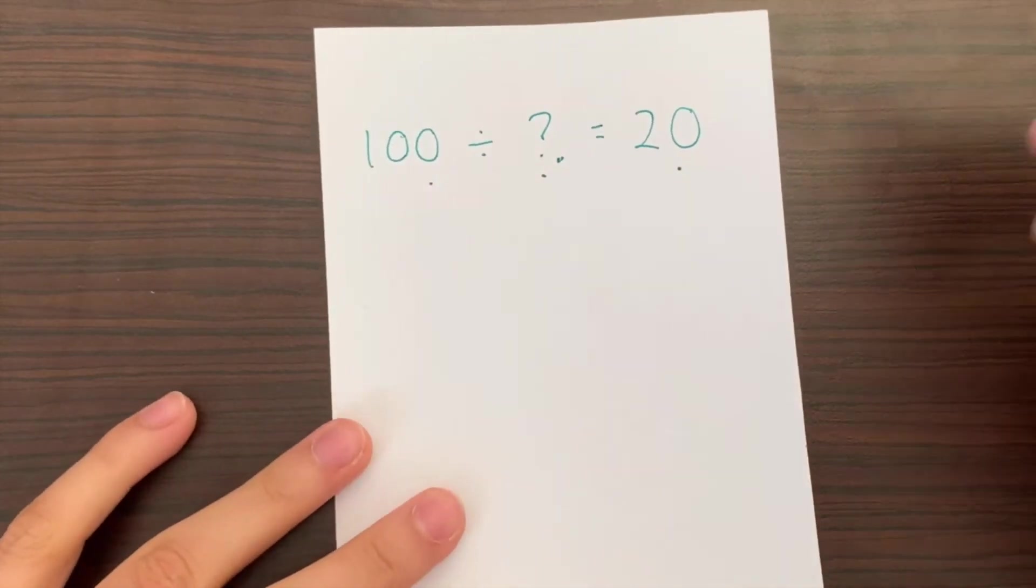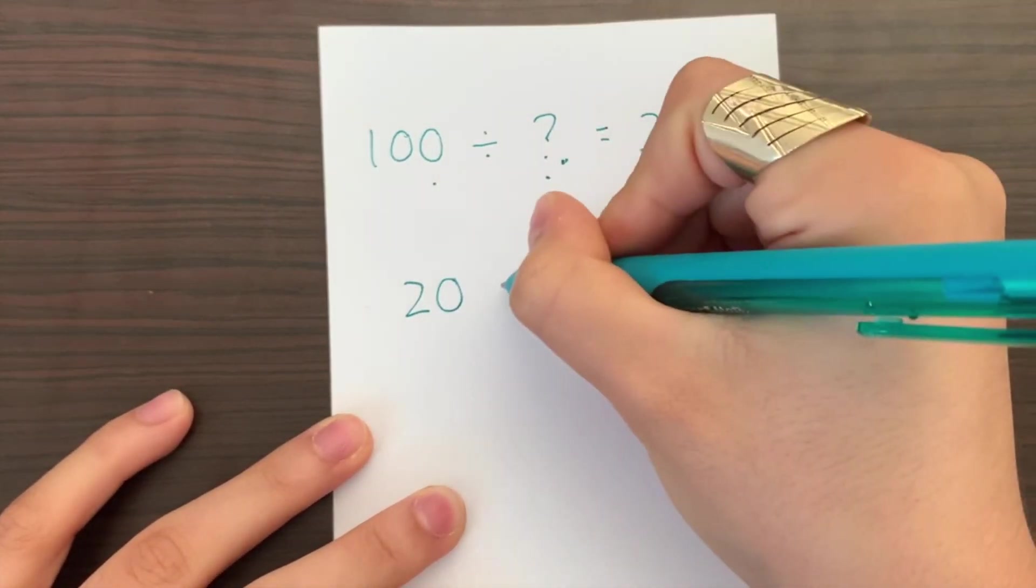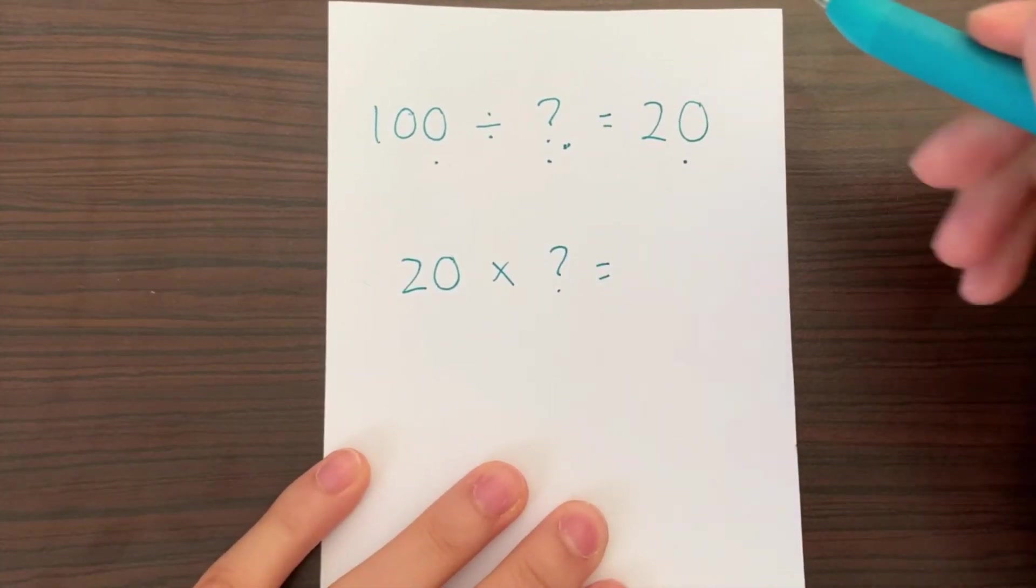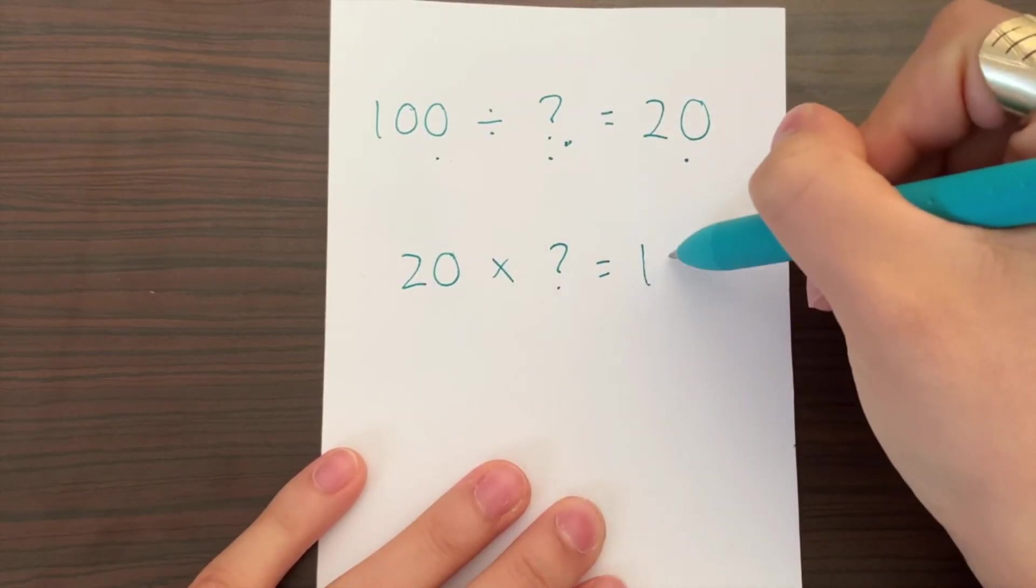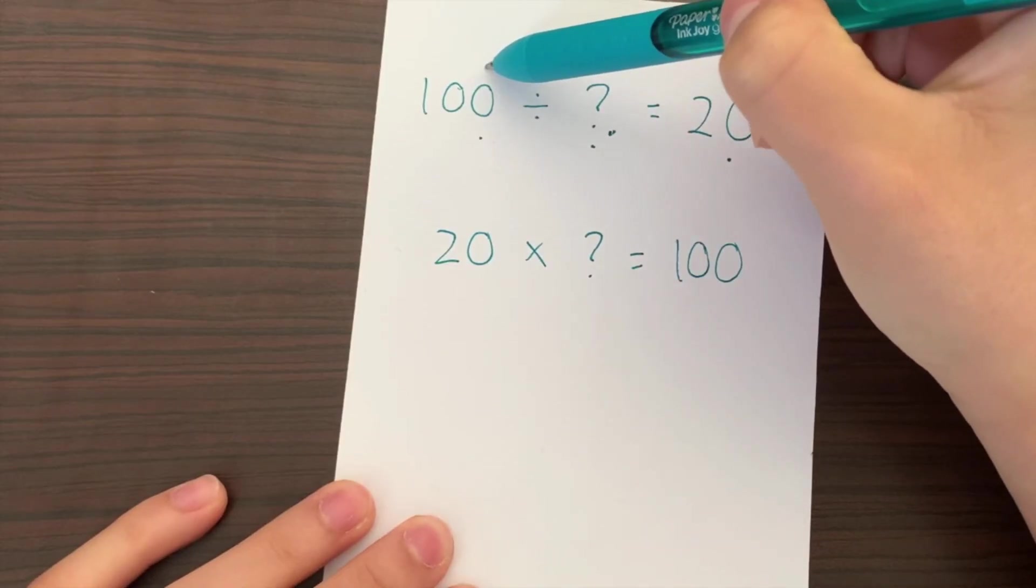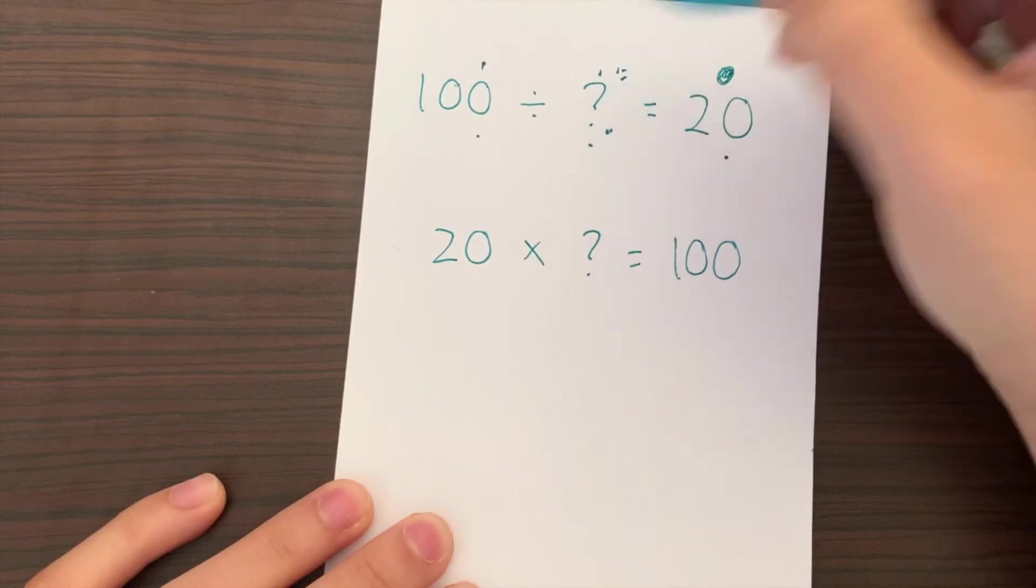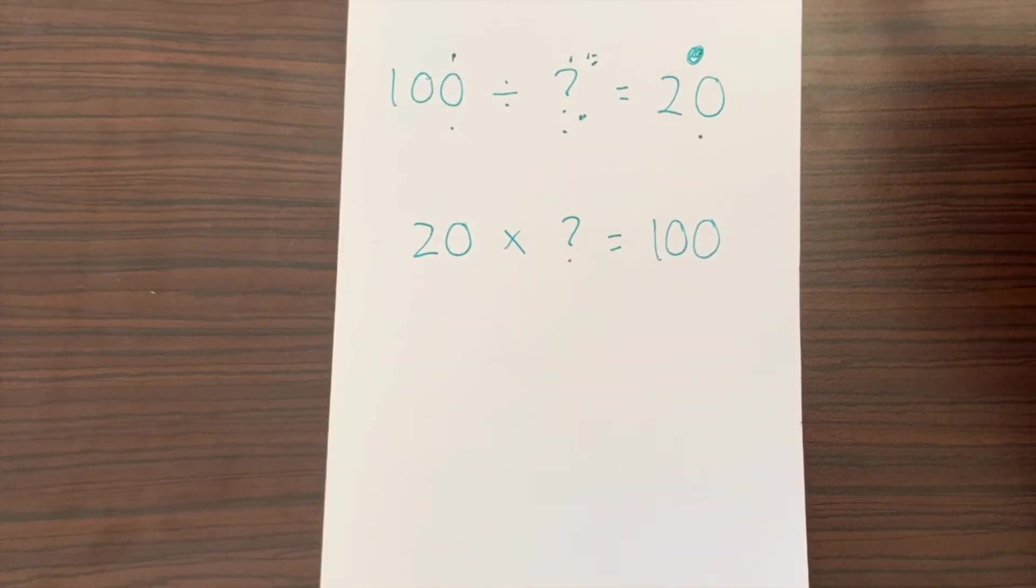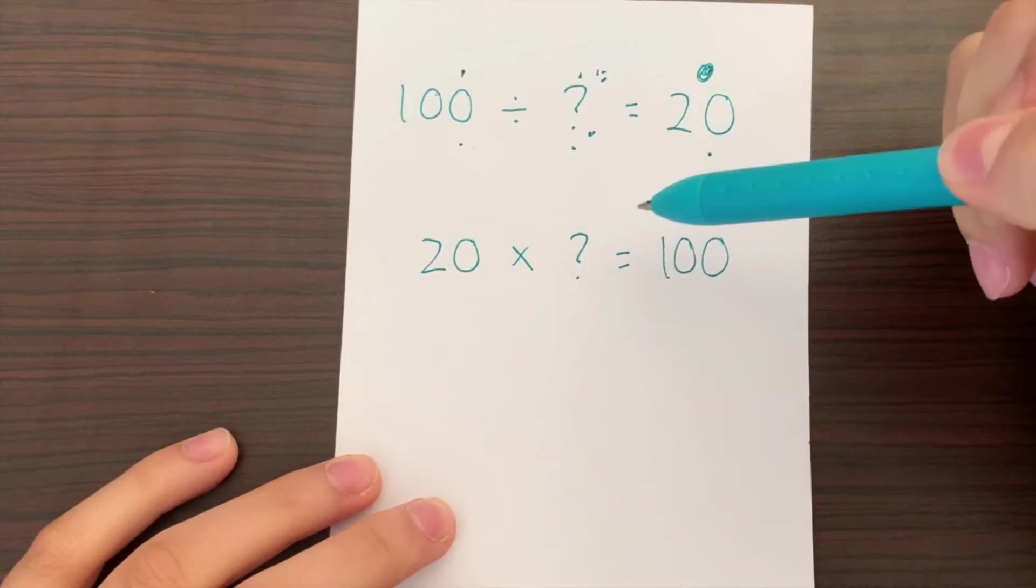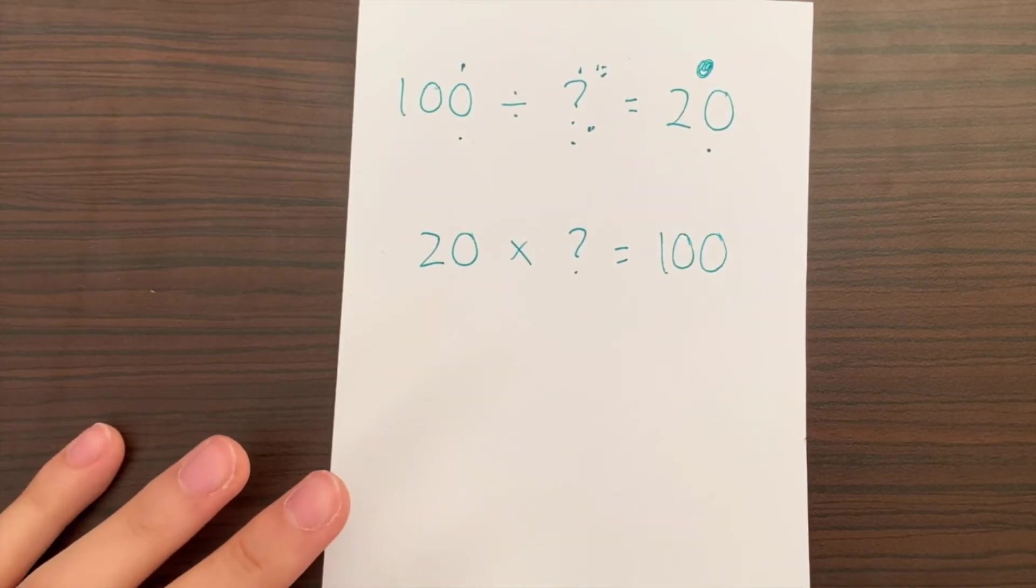So we're going to multiply 20 by the missing number. So 20 times the missing number equals 100, because this is the big number that they gave us, this is the missing number, and this is the number that we're going to use to find the missing number. It's always easier to use the smaller number given to solve the missing number when multiplying. It just makes it easier when using smaller numbers than working with bigger numbers.